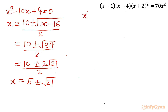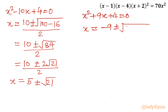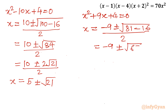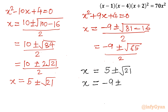Similarly, for the second quadratic equation x² + 9x + 4 = 0, applying the quadratic formula: x = (−9 ± √(81 − 16)) / 2 = (−9 ± √65) / 2. Since 65 = 13 × 5, both numbers are prime, so it cannot be simplified further. So the four solutions of our quartic equation are: x = 5 ± √21, and x = (−9 ± √65) / 2.